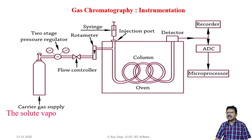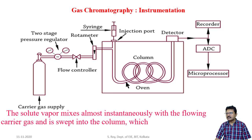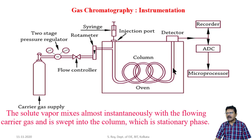The solute vapor mixes almost instantaneously with the flowing carrier gas and is swept into the column, which is the stationary phase. When the gas to be analyzed enters, it is instantaneously mixed with the carrier gas, and they flow through the column together. Different components are ultimately separated and emerge at the output of the column.